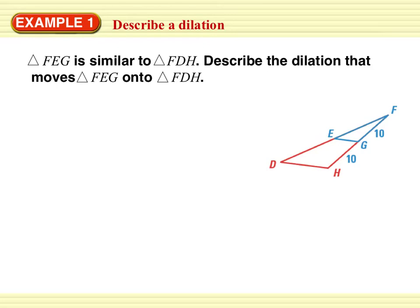First example, triangle FEG is similar to triangle FDH. Describe the dilation that moves triangle FEG onto triangle FDH. Love it when the phone happens during a video. Sorry about that. So we are describing the dilation. The figure shows a dilation, and if we look at it, it's a dilation with a center of F. So it sort of dilates out from F. So this is where it starts.